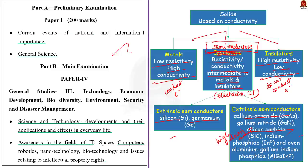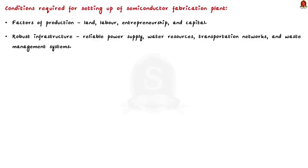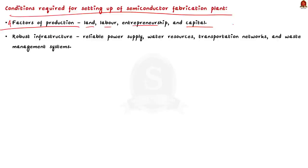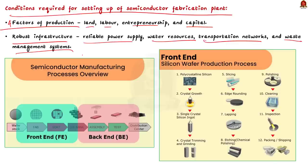The conditions required for setting up a semiconductor fabrication plant include the four factors of production: land, labor, entrepreneurship, and capital. Specifically, establishing semiconductor fabs requires robust infrastructure including reliable power supply, water resources, transportation networks, and waste management systems. Currently India imports all chips and the market is estimated to touch $100 billion by 2025 from $24 billion now.